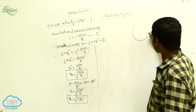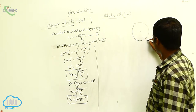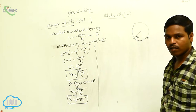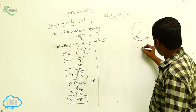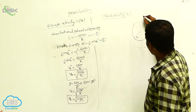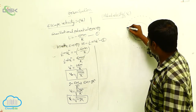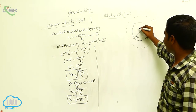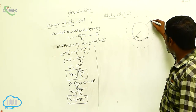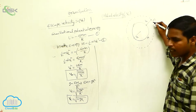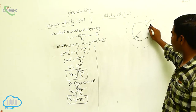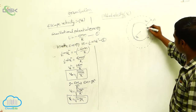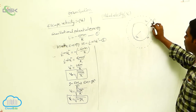Considering capital M as the mass of the planet and capital R as the radius of the planet: a small mass m is revolving around this planet at a height h above the surface of the Earth. The total distance from the center of the Earth to the object is R plus h.